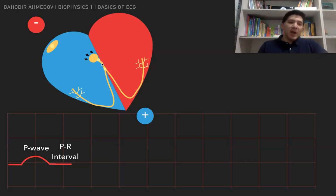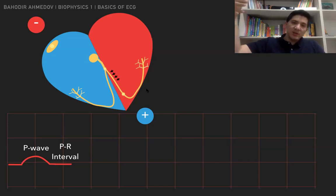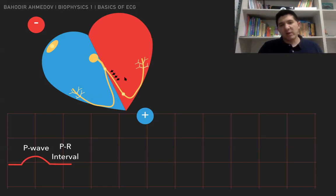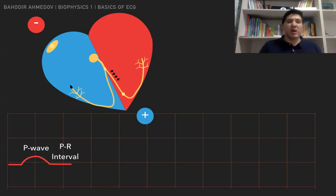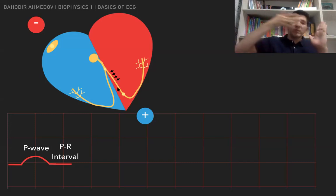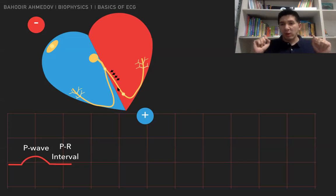Now the signal is going to move through the bundle branches. It moves through the bundle branches, and the signal goes from the left side to the right in this direction. The reason for this is that the left ventricle is bigger than the right ventricle. Since the action potential is moving in that direction, I would like to understand what kind of deflection we are going to have. In order to do this, if the dipole vector is moving in different directions, we need to find the projection of that vector onto the lead.